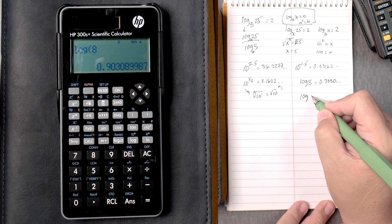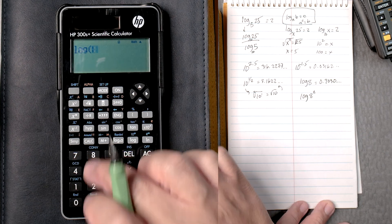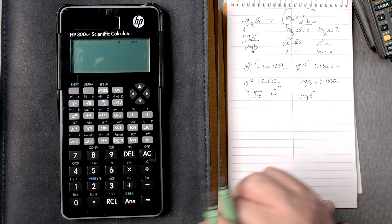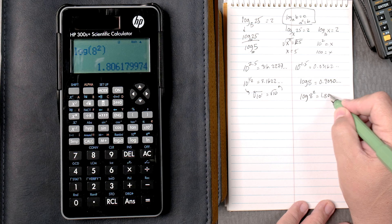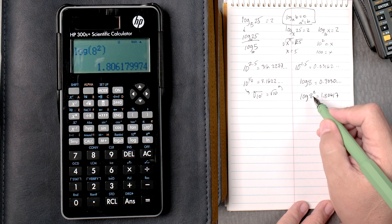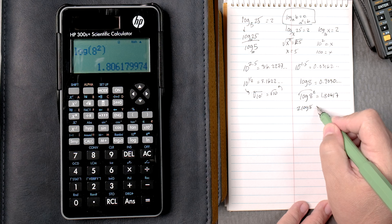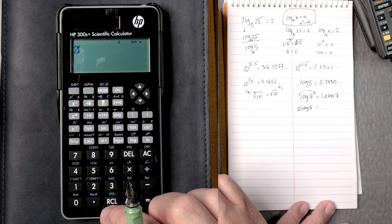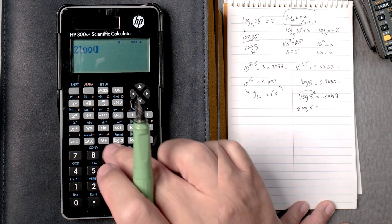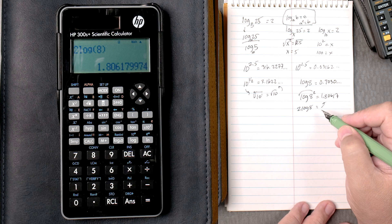How about the log of 8 squared? So this one, you say log 8, and then you can square it if you like, you can close the parentheses, equals, and it gives you 1.80617, which is correct. There is a rule that says you can bring the 2 down, 2 log of 8. So if you type 2, then the log, it automatically multiplies it, and you put an 8, you can close it, equals, gives you the same answer.